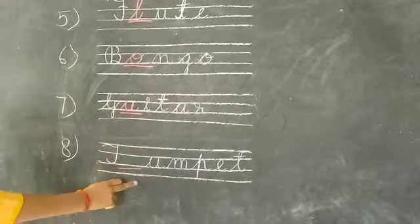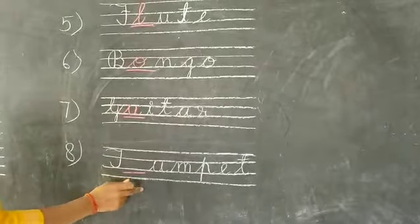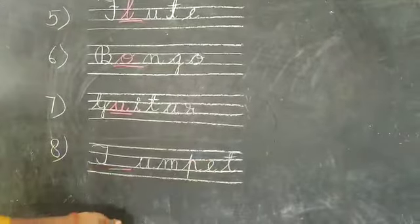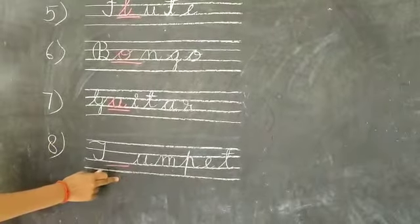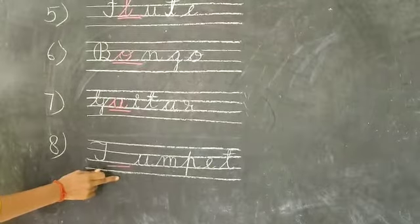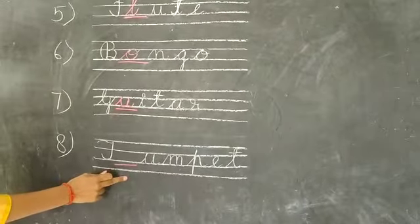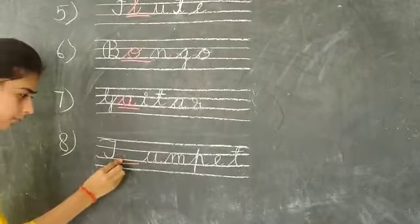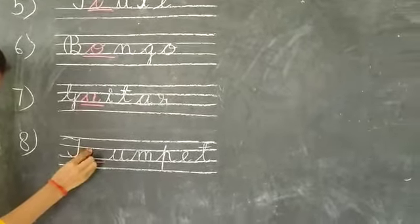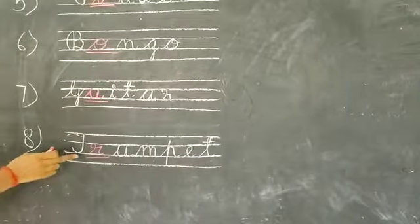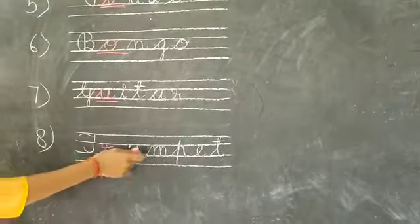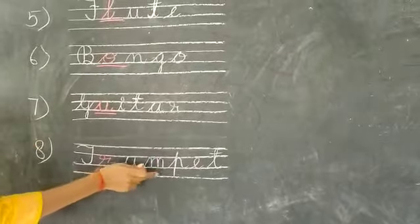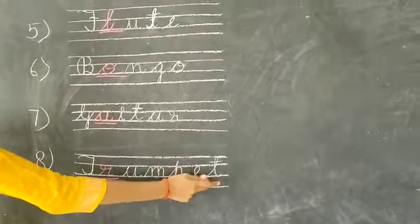Now next, number eight: T-dash-U-M-T-E-T. Now students, tell me what will we come here? Yeah, right — R. T-R-U-M-T-E-T. From back: T-R-U-M-T-E-T. From back.